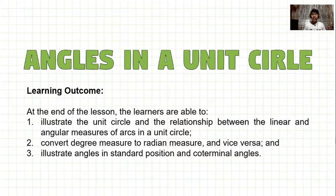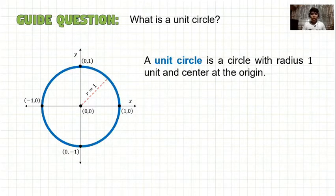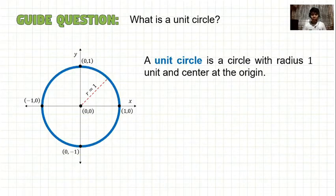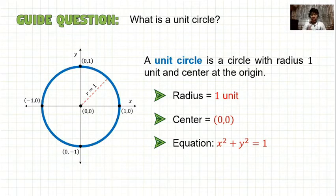To start, let us first discuss the unit circle. A unit circle is a circle with radius 1 unit and center at the origin. In the illustration, we have a circle with center (0, 0) and radius 1 unit. The things to remember: the radius is 1 unit, the center is at the origin (0, 0), and since we have center (0, 0) and radius 1 unit, the standard equation of this circle is x squared plus y squared equal to 1.